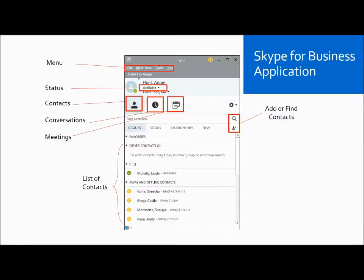Here's a closer look at the Skype for Business application that runs in the background. At the top, you have menu items. Underneath, you can see your status based on your availability. This ties into your Outlook meeting calendar and turns red when you're in a meeting.